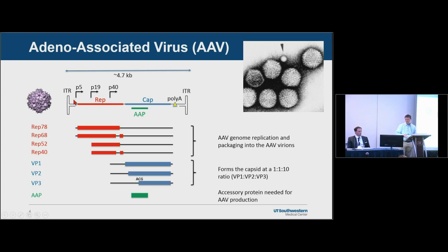The wild type AAV genome is about 4.7 KB, and that's a pretty hard and fast rule — you really can't package much more than that. The intact capsid contains VP1, VP2, and VP3, where most of the capsid is composed of VP3, with a few VP1 and VP2 proteins incorporated.